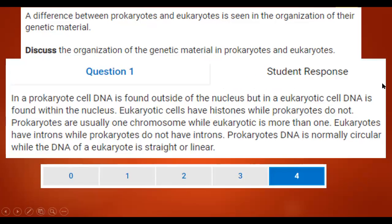This person got the full four points. They wrote: in the prokaryotic cell, DNA is found outside of the nucleus, but in eukaryotic cell, DNA is found within a nucleus. Eukaryotic cells have histones while prokaryotes do not. Prokaryotes are usually one chromosome while eukaryotic cells have more than one. Eukaryotes have introns while prokaryotes do not. Prokaryotes' DNA is normally circular while the DNA of a eukaryote is linear. Notice they used sentences for each comparison — very easy to score. Full four points.